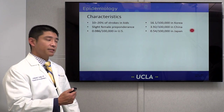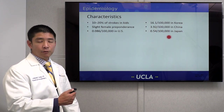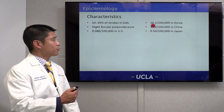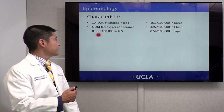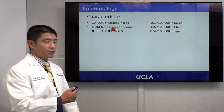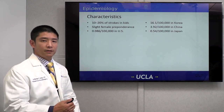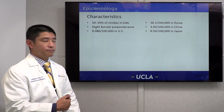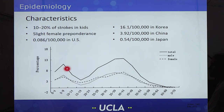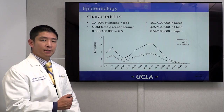This is reflected in international statistics. Moya Moya is not a well-characterized disease in Western Europe or Africa, but in East Asia it happens far more commonly than we see in the United States population as a whole. It also shows a slight female preponderance, and it is a very important component of strokes in children. Overall, we see it in young children, in young adults, slightly more commonly in women than in men, and in East Asian populations compared to other populations as far as we know.